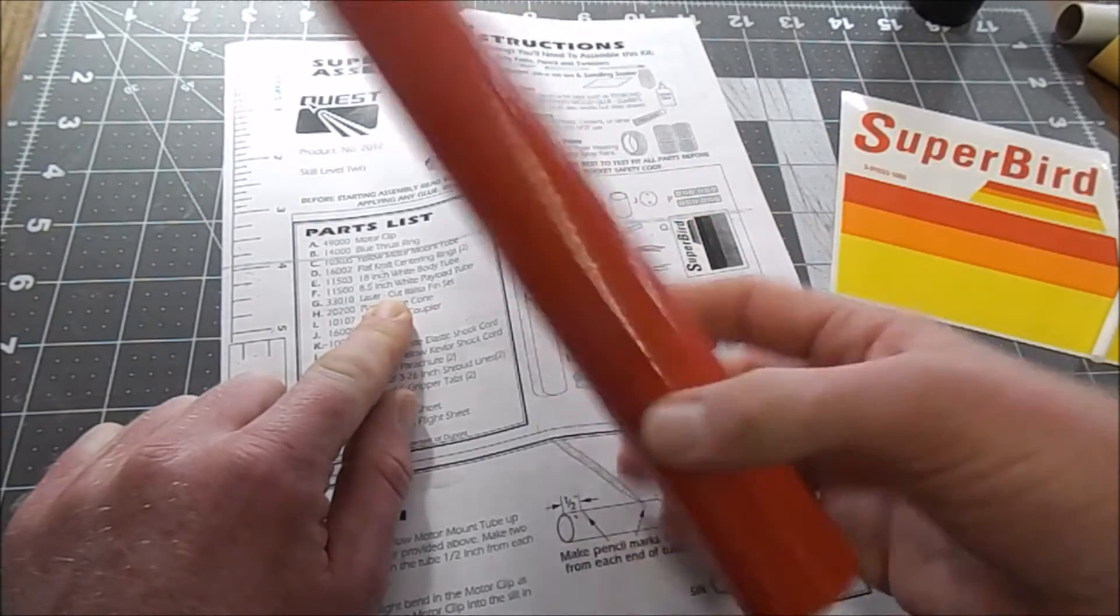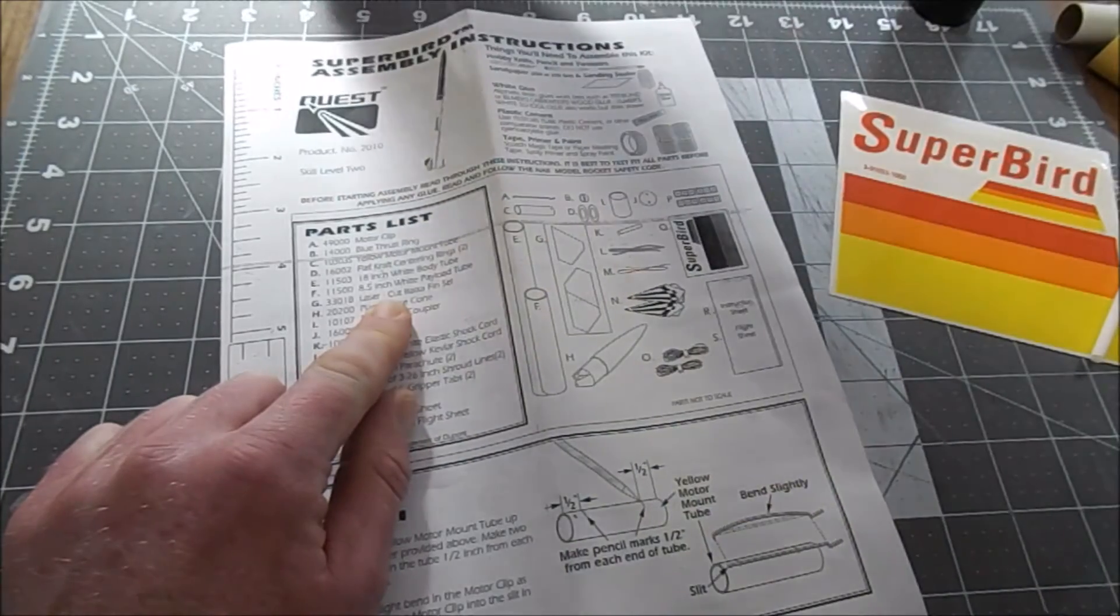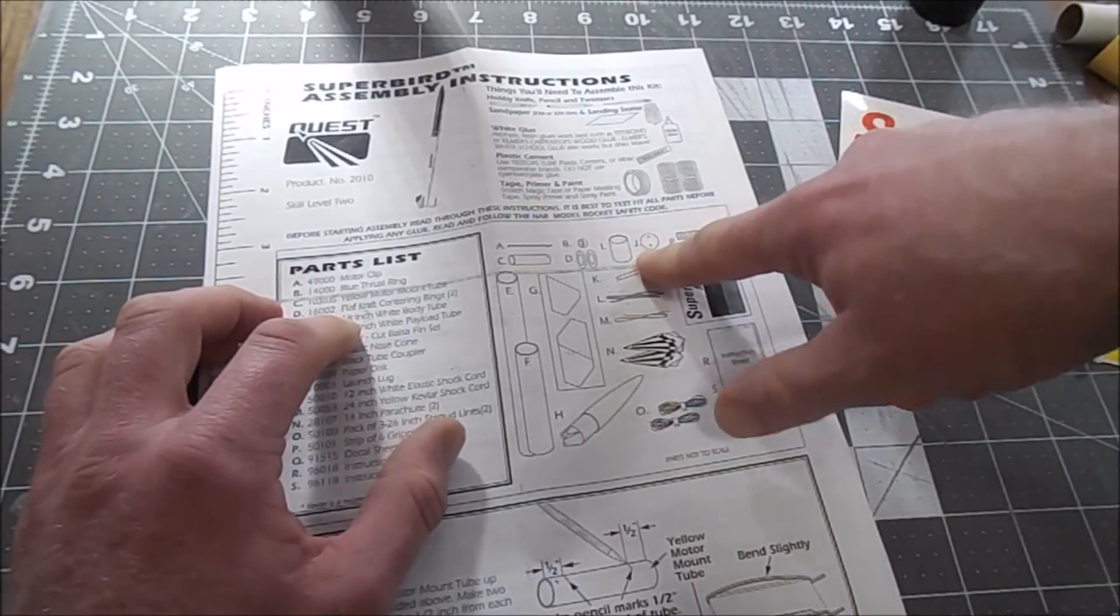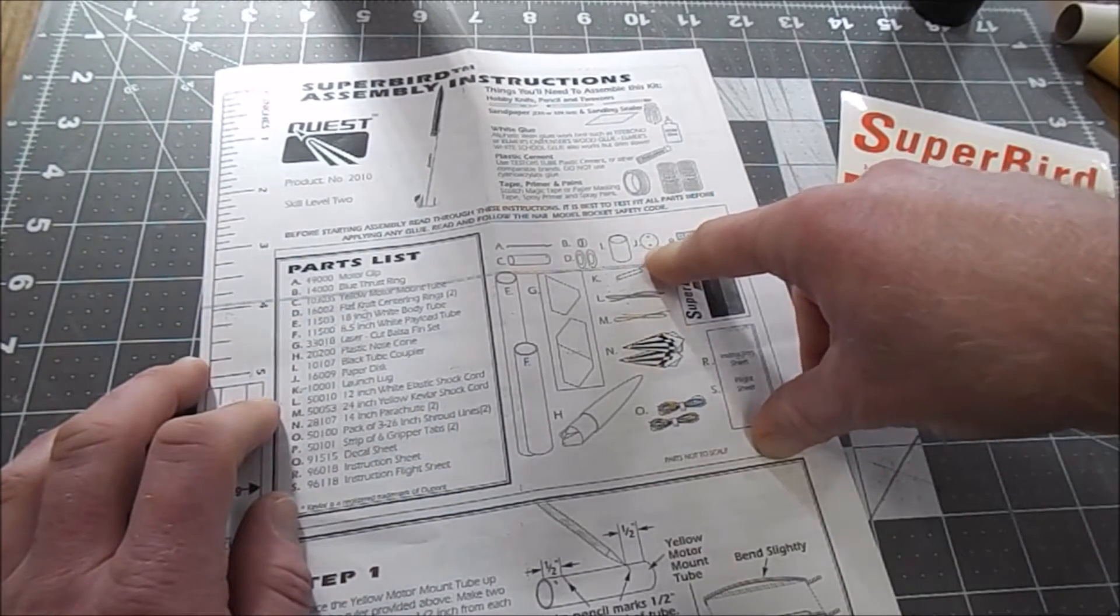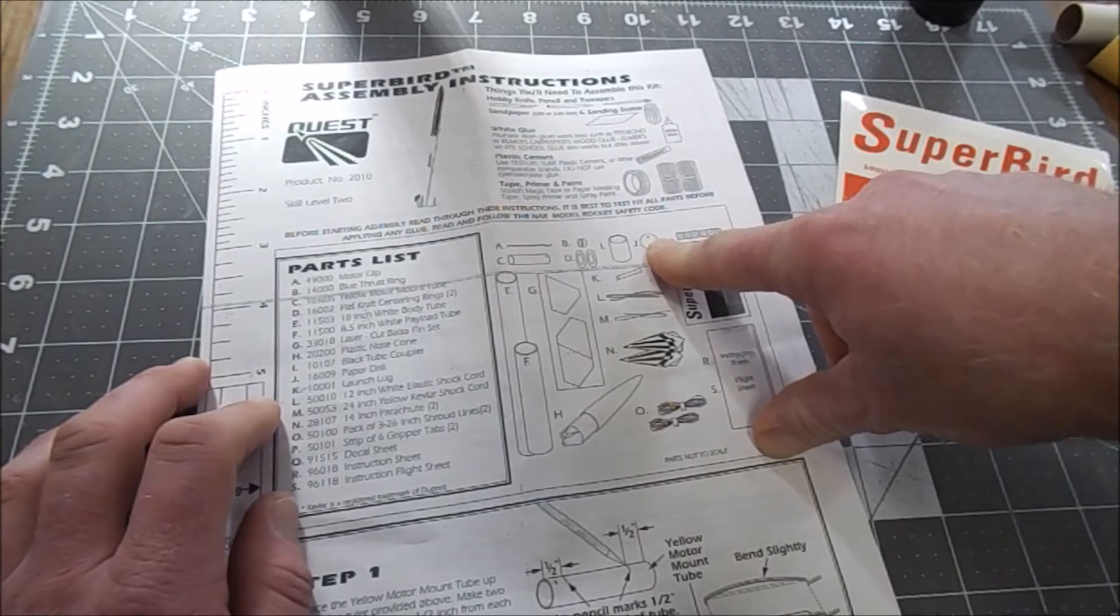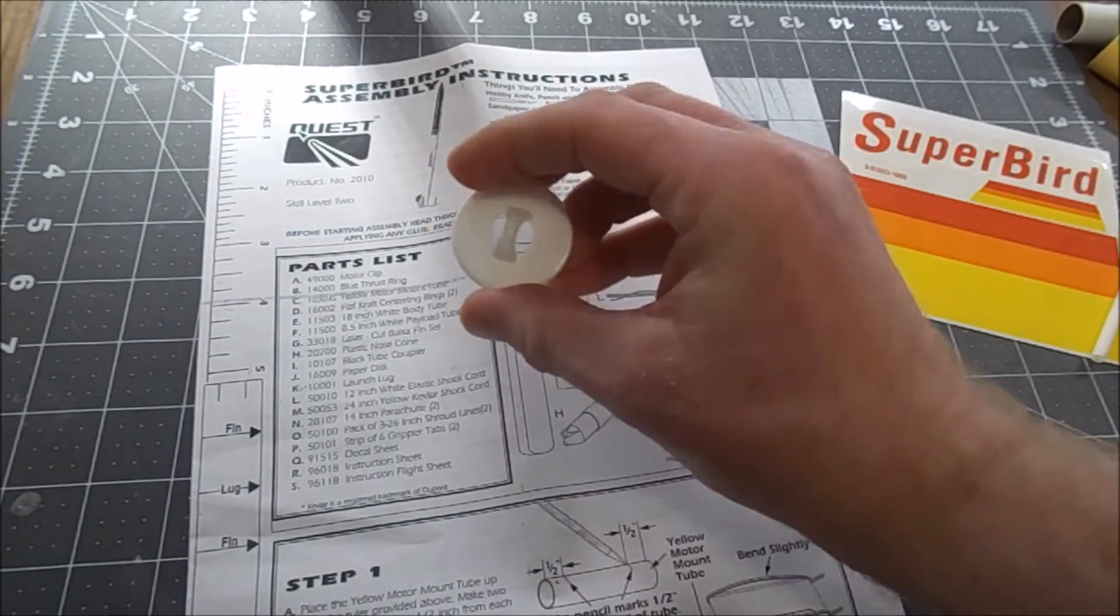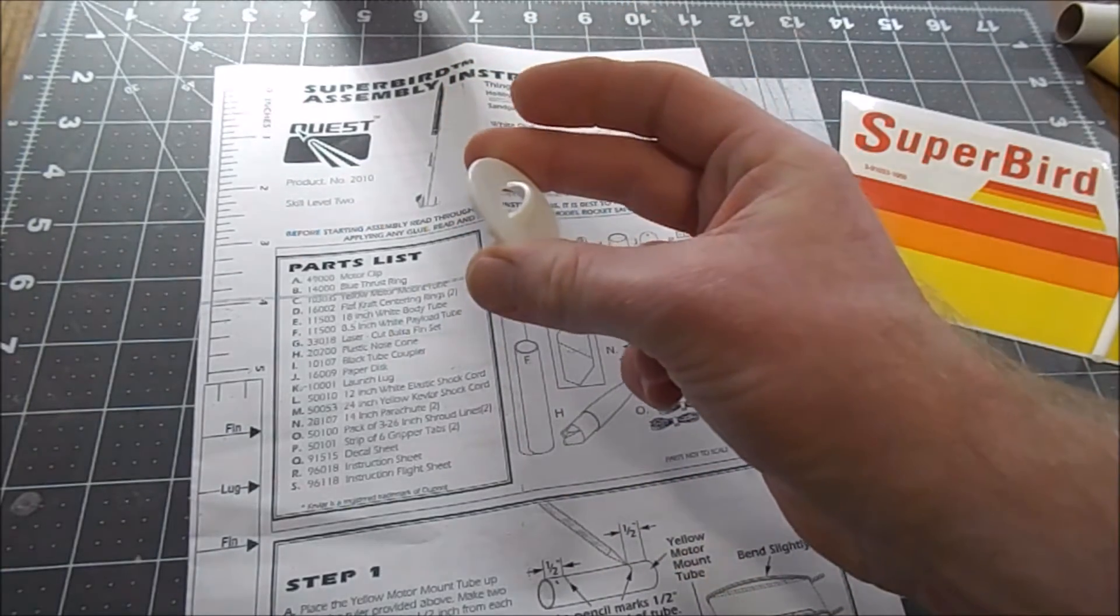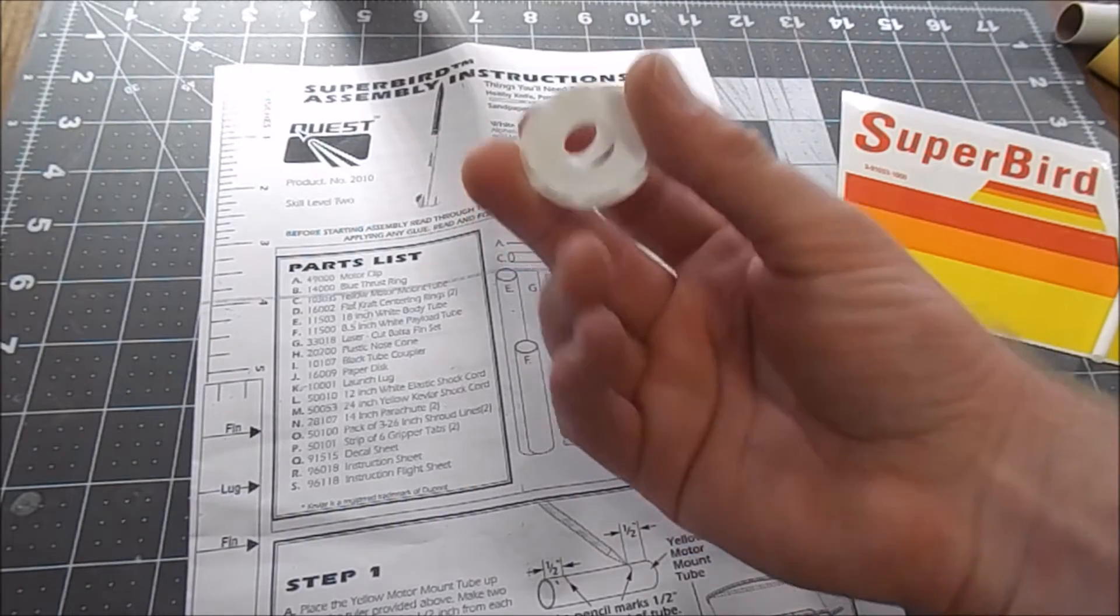Another part that we are supposed to have, part number J, is a paper disc. This kit doesn't come with a paper disc, it does come with a plastic disc however. This is going to go into the bottom half of the coupler and form the payload section bulkhead.